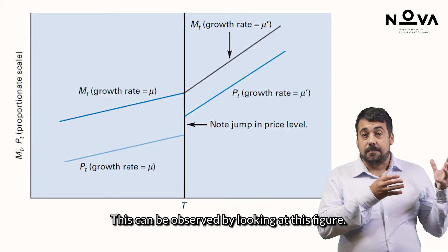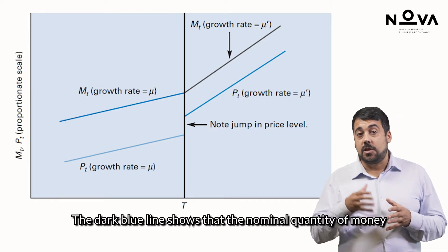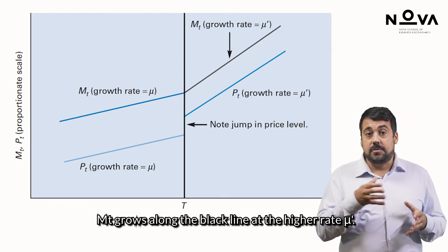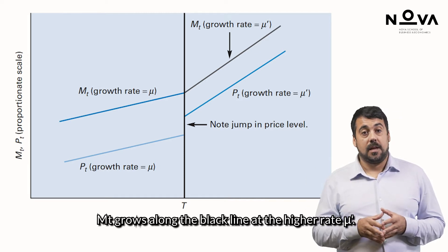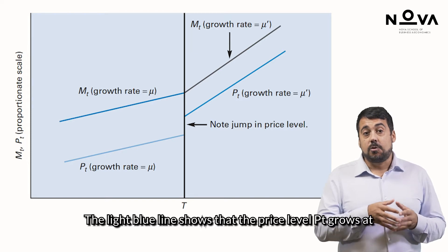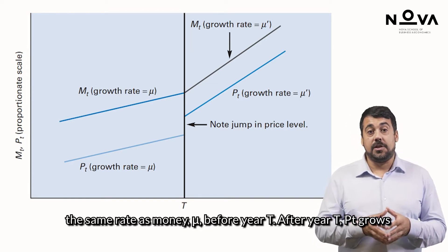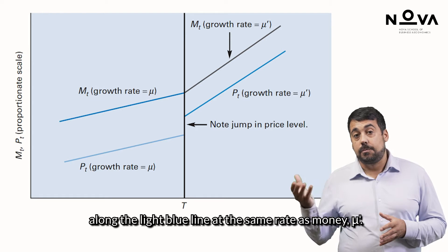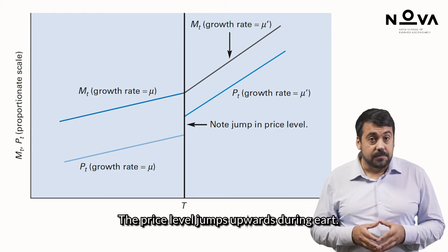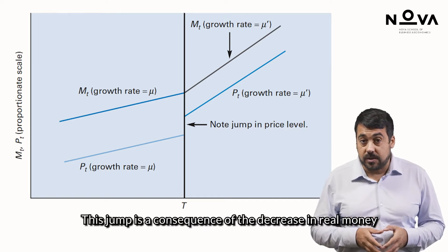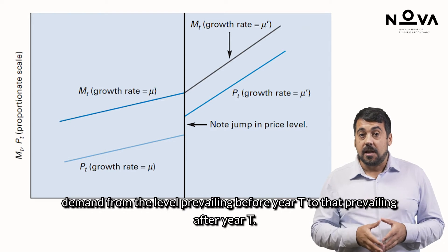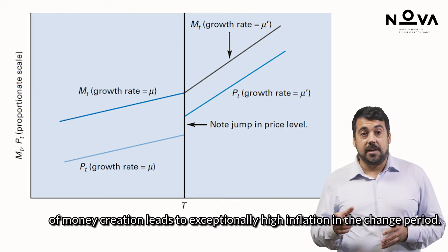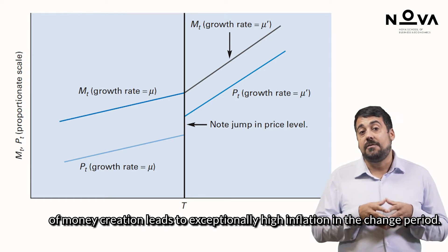This can be observed by looking at this figure. The dark blue line shows that the nominal quantity of money, MT, grows at the constant rate mu before year T. After year T, MT grows along the black line at the higher rate mu prime. The light blue line shows that the price level PT grows at the same rate as money, mu, before year T. After year T, PT grows along the light blue line at the same rate as money, mu prime. The price level PT jumps upwards during year T. This jump is a consequence of the decrease in real money demand from the level prevailing before year T to that prevailing after year T. An increase in the growth rate of money creation leads to exceptionally high inflation in the transition period.